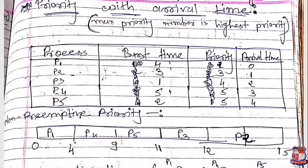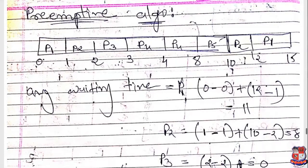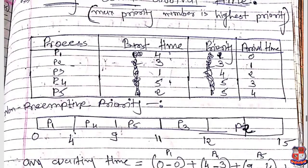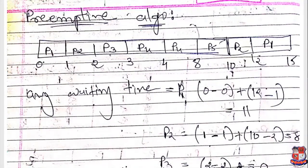At time 2, we check processes with arrival time 2 or less: P1, P2, and P3 are available. Their priority numbers are 2, 3, and 4 respectively. The highest priority value is 4, so P3 is selected. P3 executes for one second from 2 to 3. Since P3's burst time is 1, it completes at time 3.